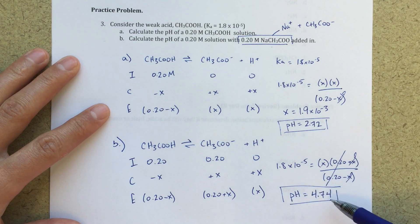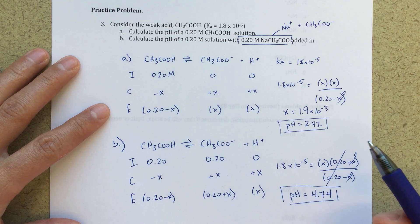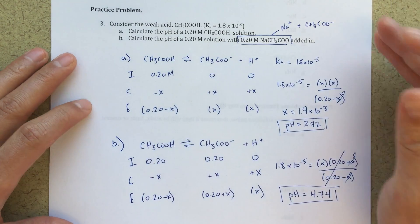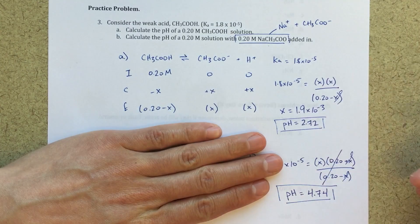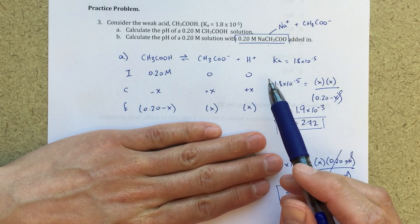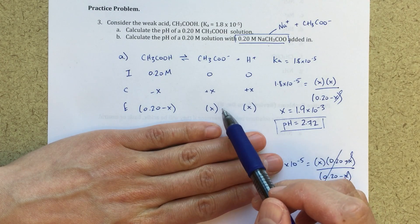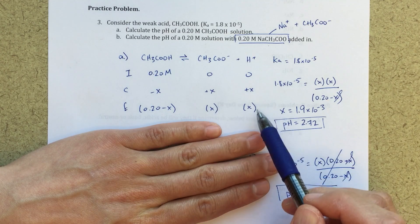So if I see this 4.74, this is a higher pH. So if we think about our original situation, let's just sort of cover this up, and think about our original situation. At equilibrium, I've got some amount of CH3COO minus. I've got some amount of H plus.